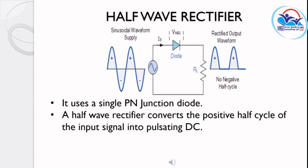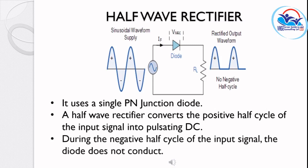When forward biased, the diode conducts and a positive half-cycle appears at the output. During the negative half-cycle, the diode is reverse biased and does not conduct.